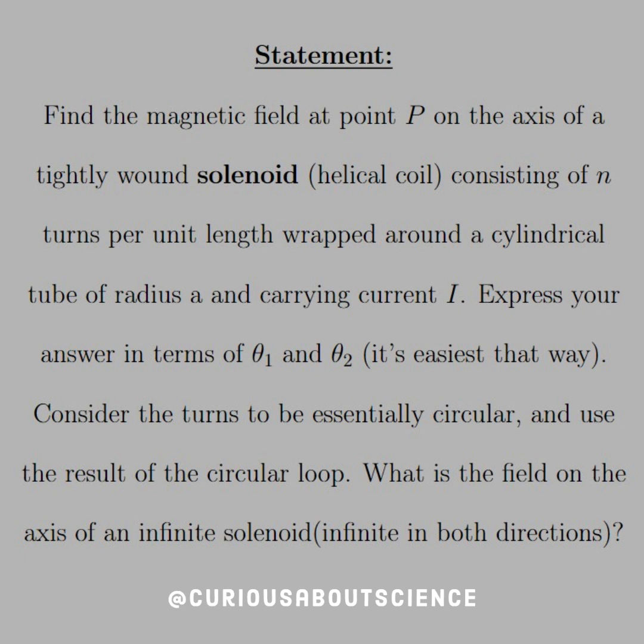So our statement reads: find the magnetic field at point P on the axis of a tightly wound solenoid, helical coil, consisting of n turns per unit length wrapped around a cylindrical tube of radius A carrying current I. Express your answer in terms of theta 1 and theta 2. It's easiest that way.